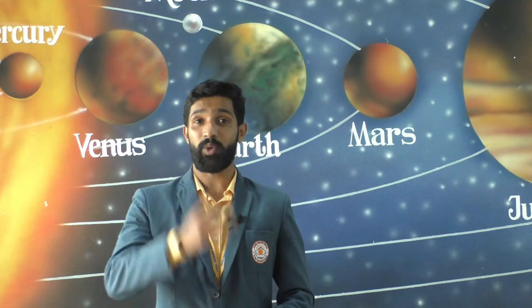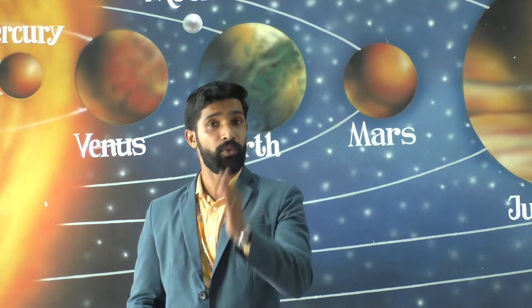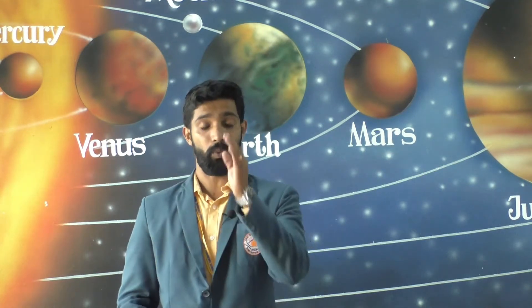So dear kids, welcome back to the social science class. I was talking about the beauty of our mother earth, the only planet in the solar system where life is known to exist. So do you know what are the features that make the existence of various forms of life possible on earth?